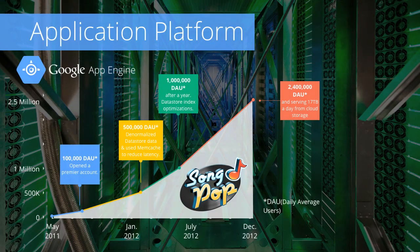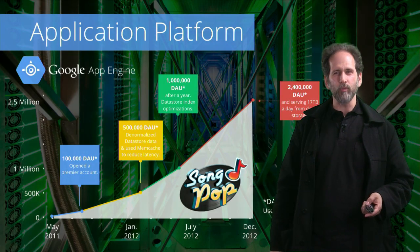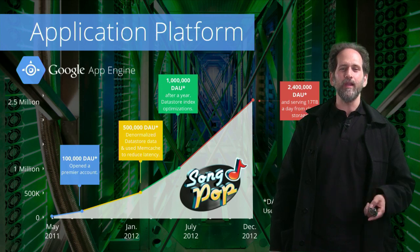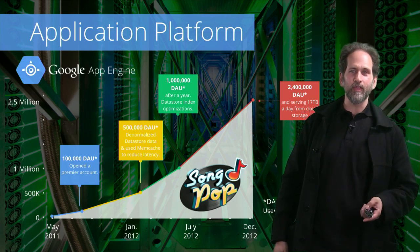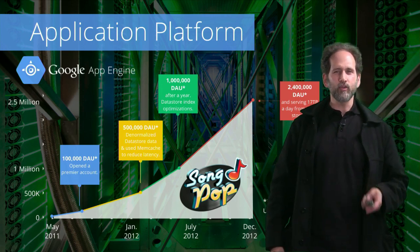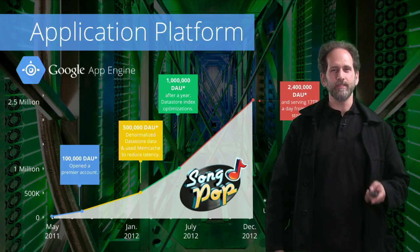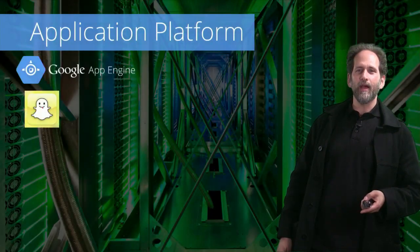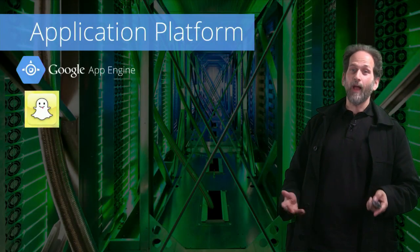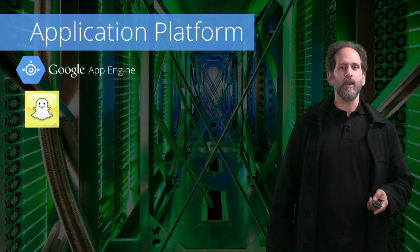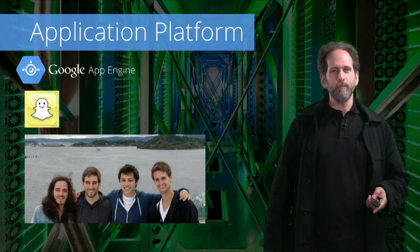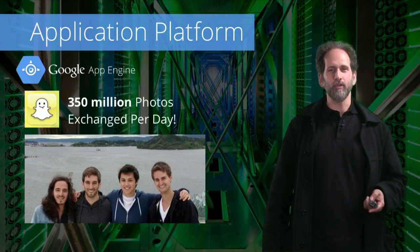How does this work in production? For Songpop, one engineer was enough to identify the scaling roadblocks and quickly solve them, taking a product from zero to 2.4 million daily active users in a year while working on adding features to the game at the same time. Cloud Storage also helped as a scalable, affordable, reliable, and high performance content delivery service. Many of you may recognize this icon — Snapchat is hosted on App Engine. Here's the initial team of four people from Snapchat that now uses App Engine to exchange 350 million photos per day.